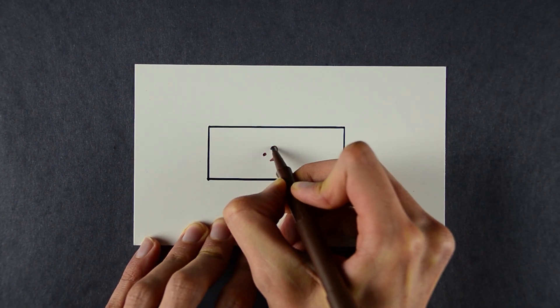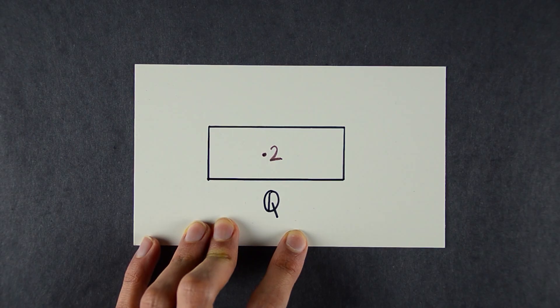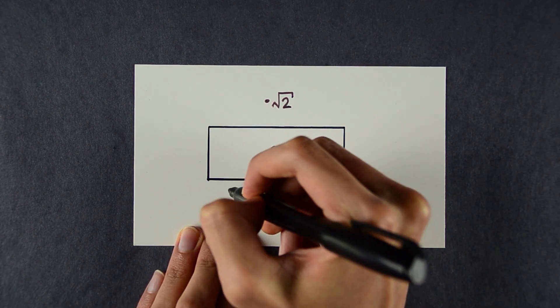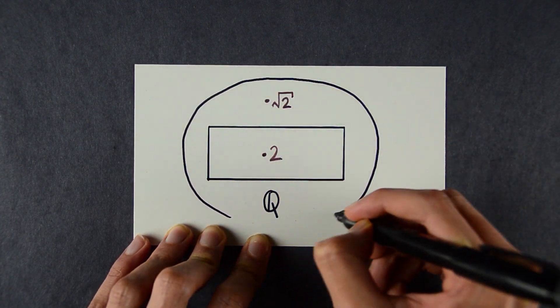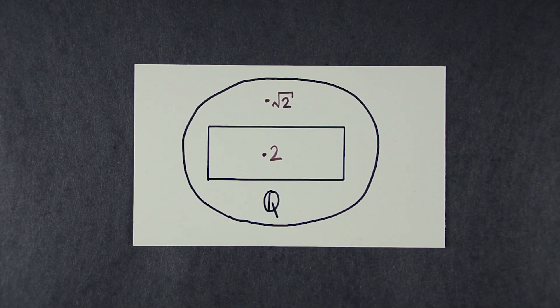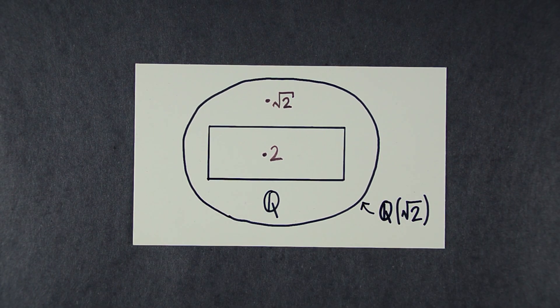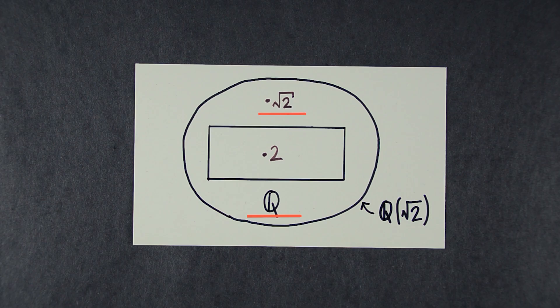Importantly, you can't take square roots. 2 is a rational number, but the square root of 2 isn't. If you want to talk about the square root of 2, you have to extend the rationals to a larger field that contains the square root of 2. We'll define a field called Q adjoin square root of 2 as the smallest field containing Q and the square root of 2.